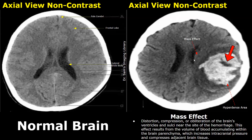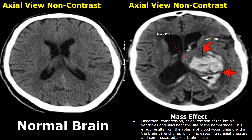This is another image of intracerebral hemorrhage showing the swirl sign. Low density and heterogeneous areas are present within the hyperdense hemorrhage — this type of appearance is the swirl sign. Mass effect is also present; the ventricle is compressed at this point.